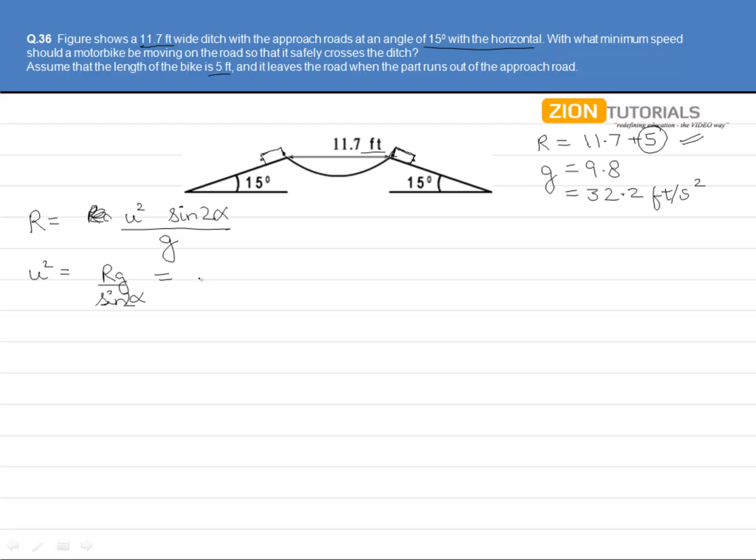Putting the values in this formula, we get 16.7 into 32.2 over half, giving us a value of 32 feet per second.